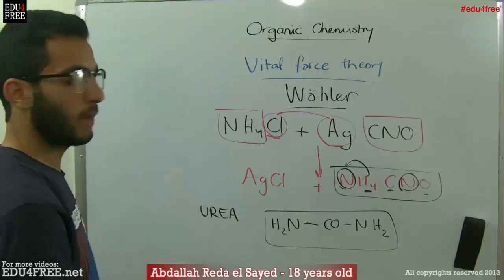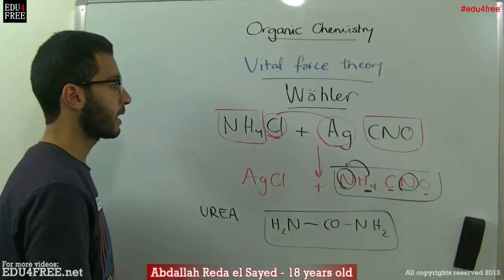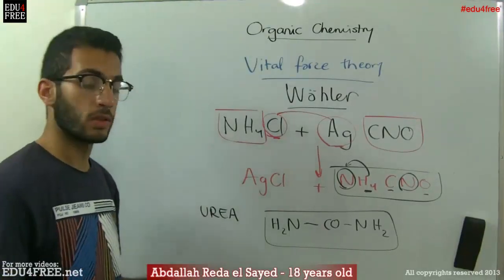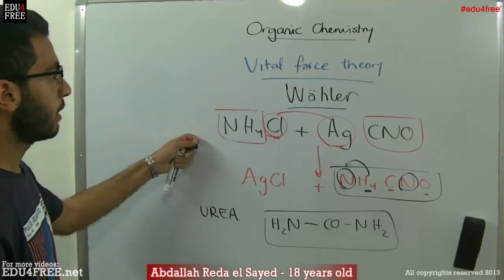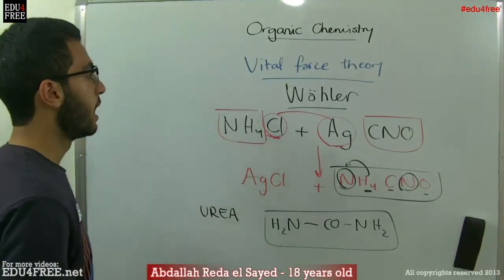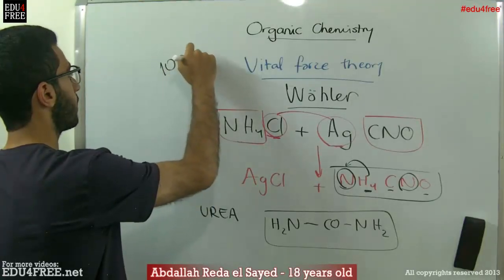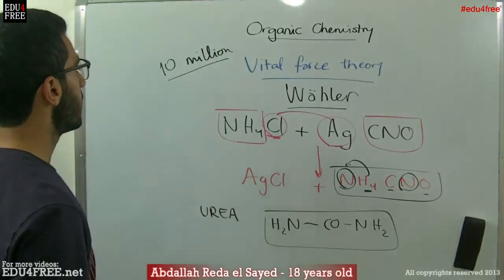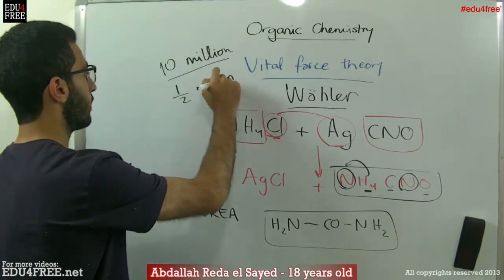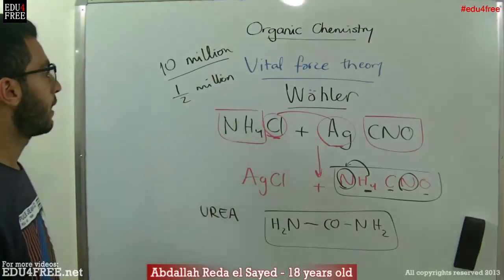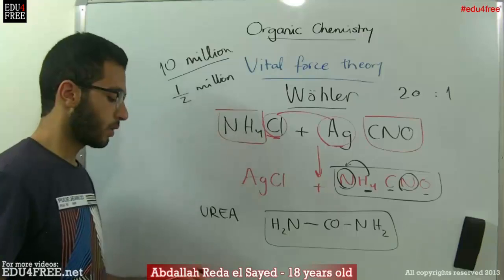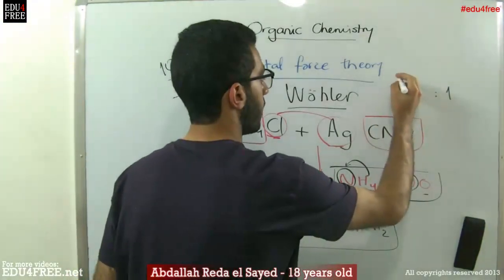He succeeded in preparing urea from ammonium chloride and silver cyanate in the lab without obtaining it from an organic origin. By doing that, he proved the theory of Berzelius wrong. This was a very important point in the history of organic chemistry because scientists began to prepare organic compounds artificially. Now we have approximately 10 million organic compounds compared to half a million inorganic compounds — a ratio of 20 to 1 — which shows how important organic chemistry is.